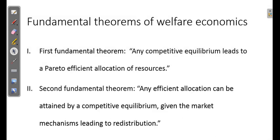The second fundamental theorem is also quite related but it looks at the same relationship in a different manner. The second welfare theorem says that any efficient allocation can be attained by a competitive equilibrium given the market mechanisms leading to redistribution. So any efficient allocation which has been achieved by a competitive equilibrium is possible if that market has mechanisms of redistribution. If individuals in the market can exchange, or if producers in the market can exchange and they can shift their current positions, then this efficient allocation is possible.